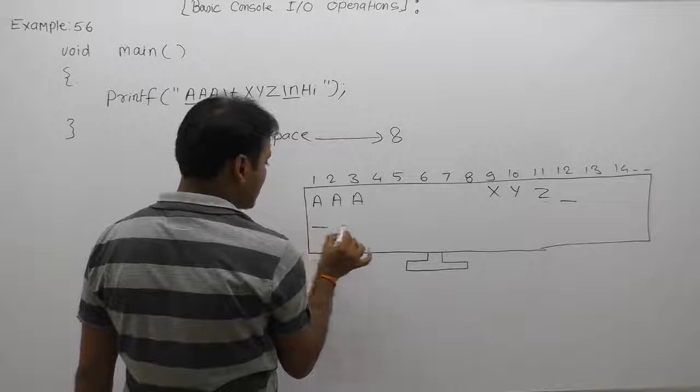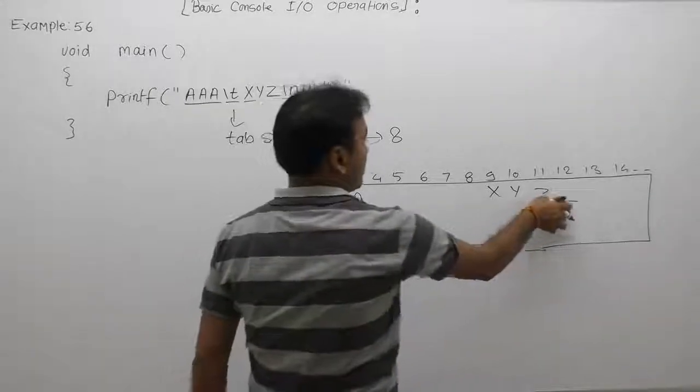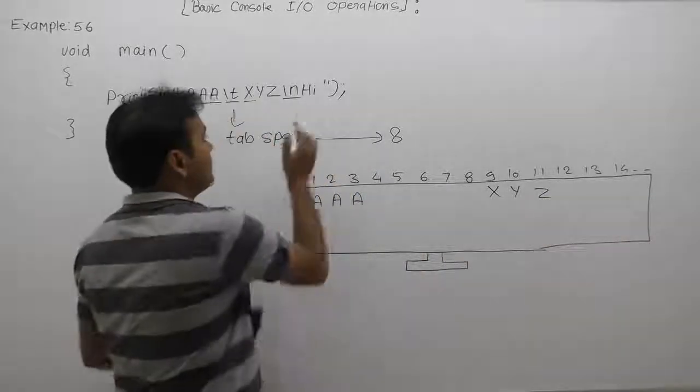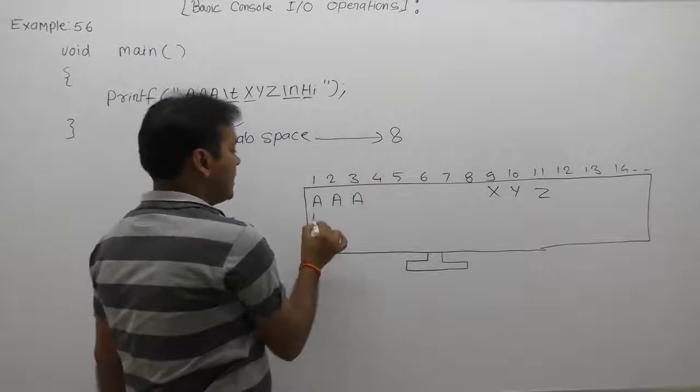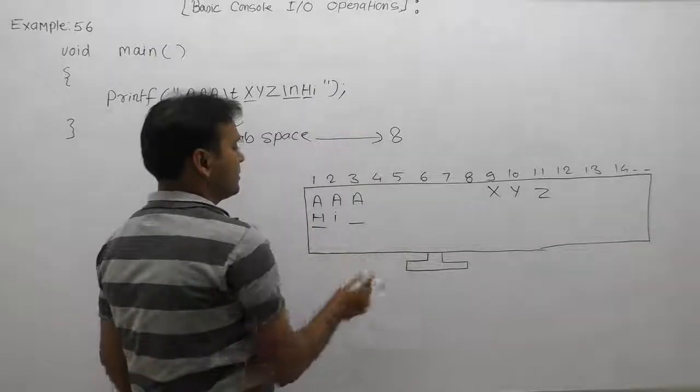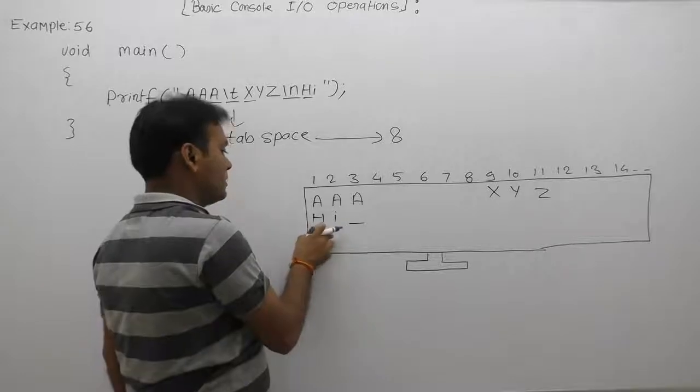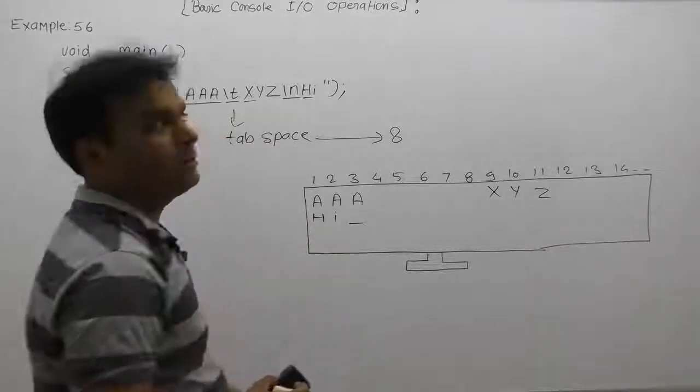Now this is the current position. After that it will print the characters H and I, and the cursor will be available at the third position. This is the final message of the given printf statement.